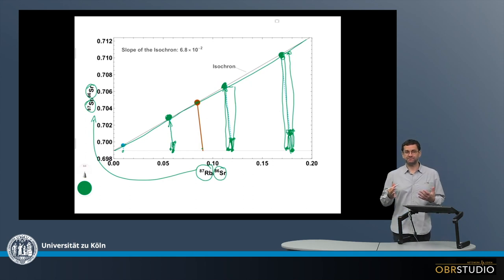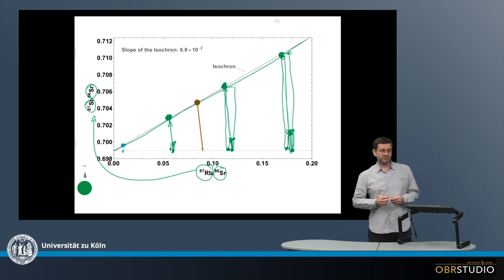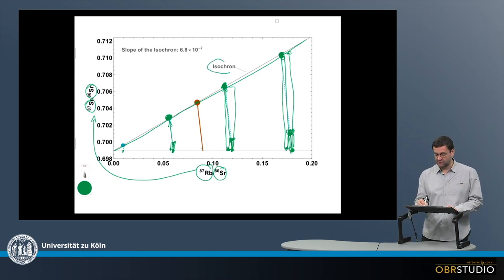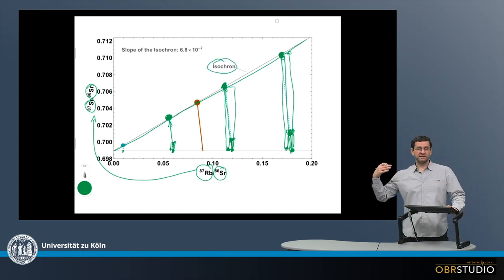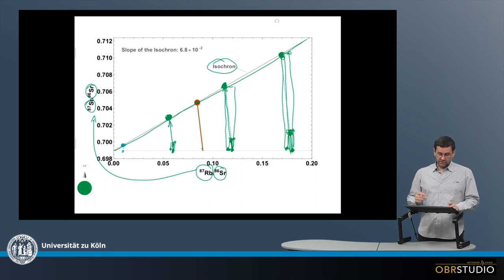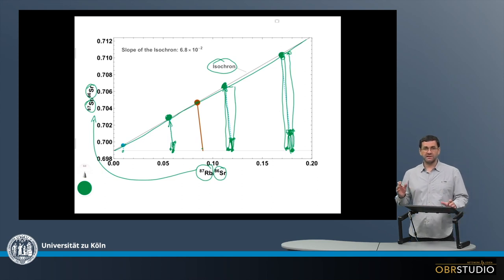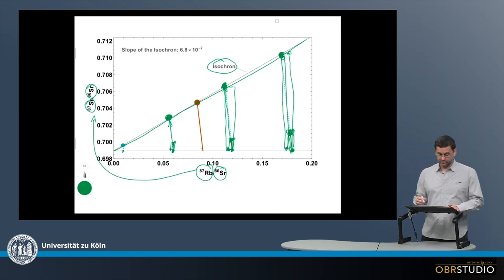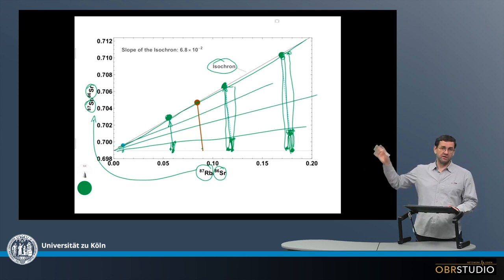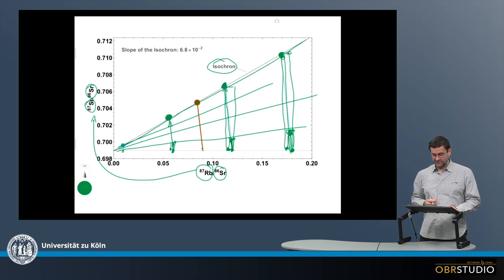Because this line represents compositions that have all evolved over the same amount of time, it is an isochron — a composition at the same elapsed time since the initial composition. This is how the isochron evolves: initially the slope is shallow and it rotates progressively, moving along the initial compositional trajectories.